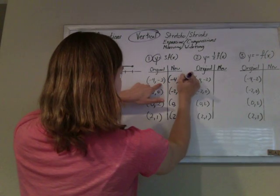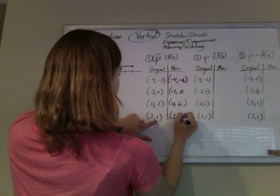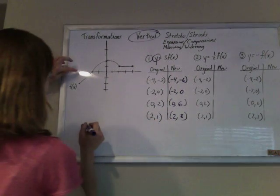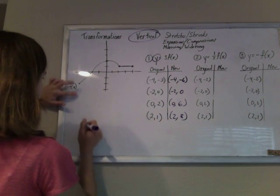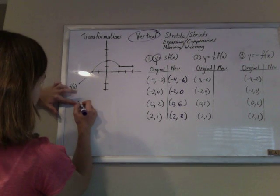So now it's going to be negative 6, 0, 6, and 3. And when I do that, I've got the point negative 4, negative 6. So this y value became 3 times what it used to be.